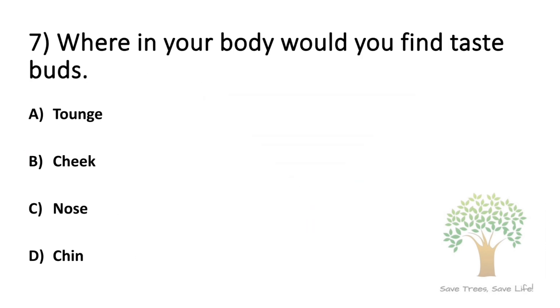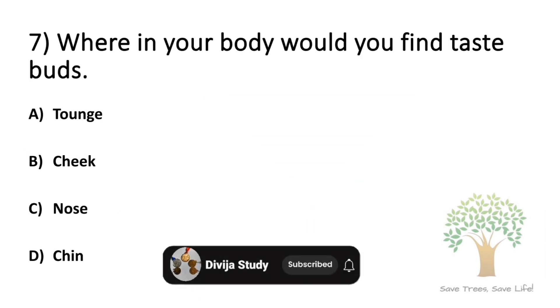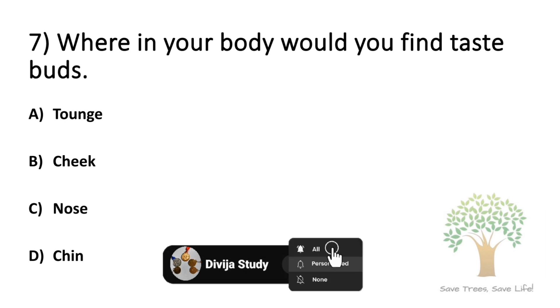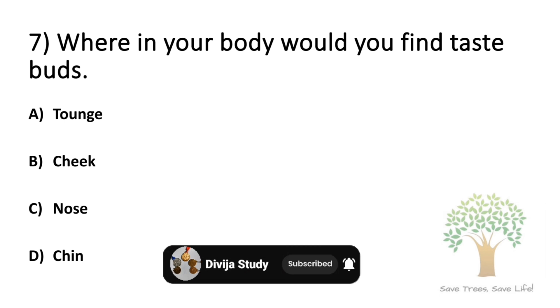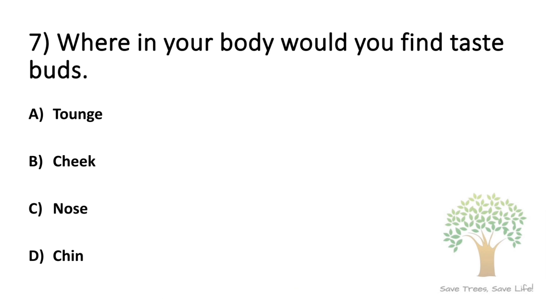Question number 7. Where in your body would you find a taste box? Option A: tongue. Option B: cheek. Option C: nose. Option D: chin. The answer is Option A, tongue.